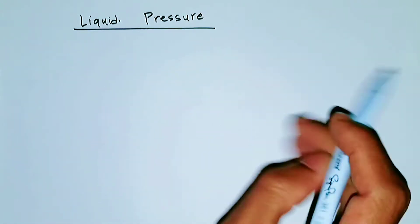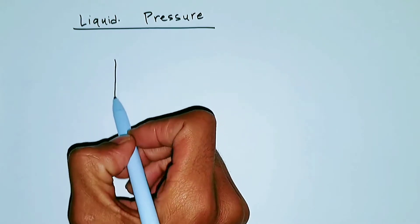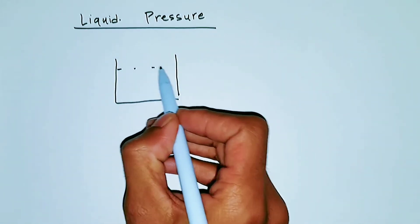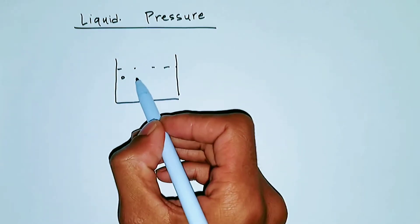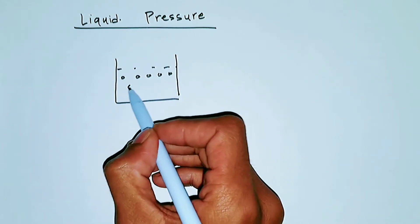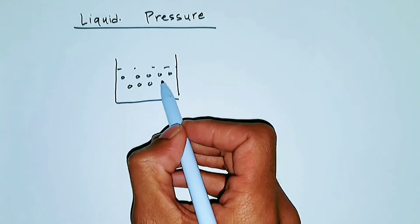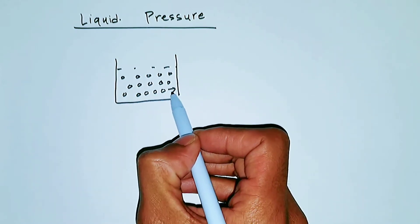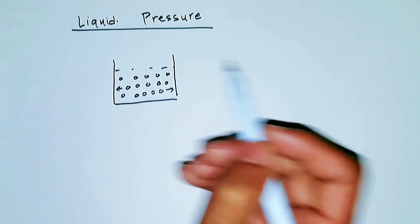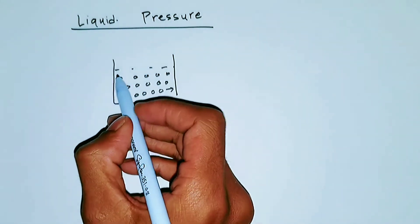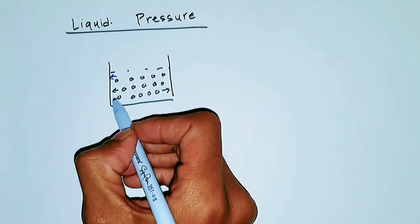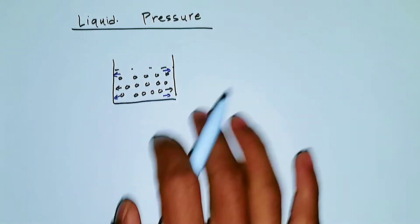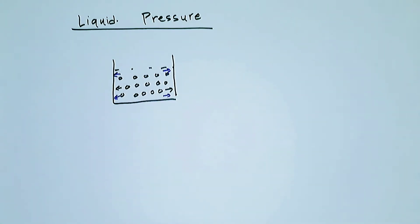We'll be talking about liquid pressure. If you put a liquid in a container, there are water molecules — or liquid molecules — and what these molecules do is apply pressure towards the wall of the container. So these water molecules are applying pressure on the walls of this container, and that pressure which is exerted by liquid is called liquid pressure.